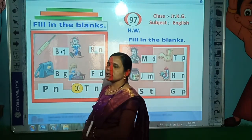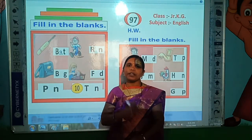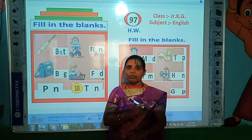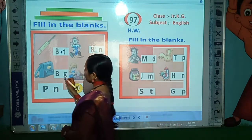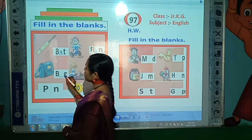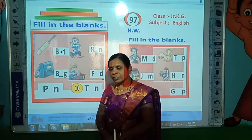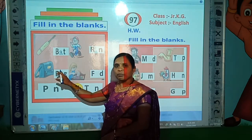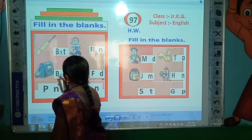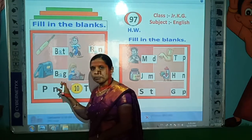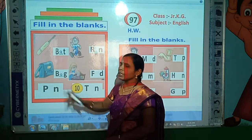Now look here. Which picture is this? Yes, this is the picture of BAT. Tell me the spelling of BAT. Correct. B-A-T, BAT. Which letter is missing here? Correct, A is the missing letter here. So write here A. Now read: B-A-T, BAT. B-A-T, BAT. B-A-T, BAT.